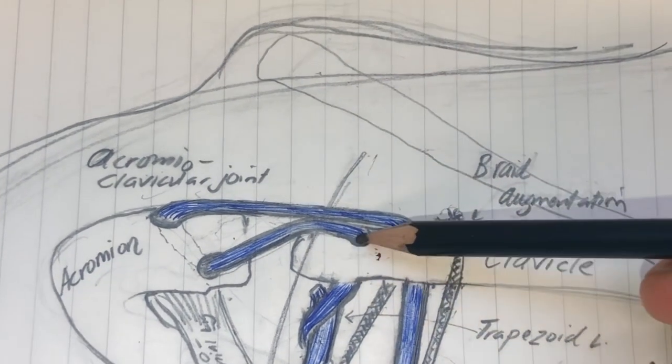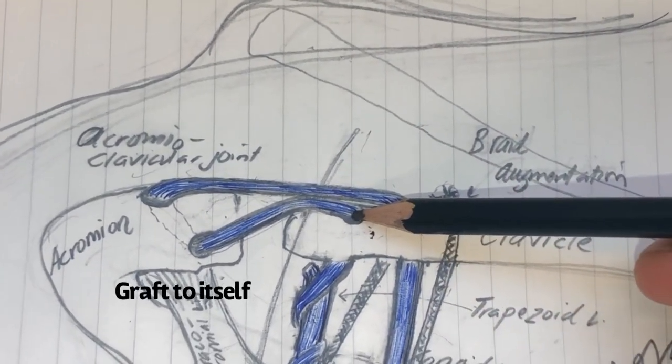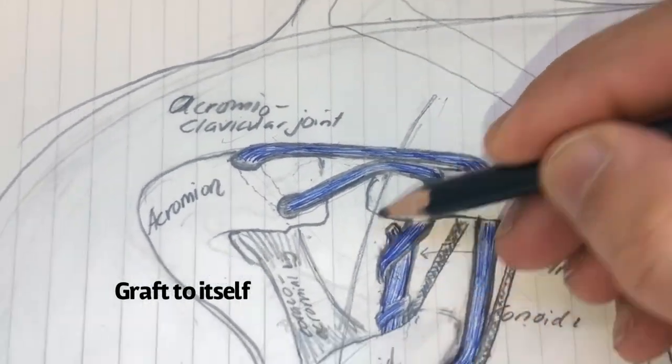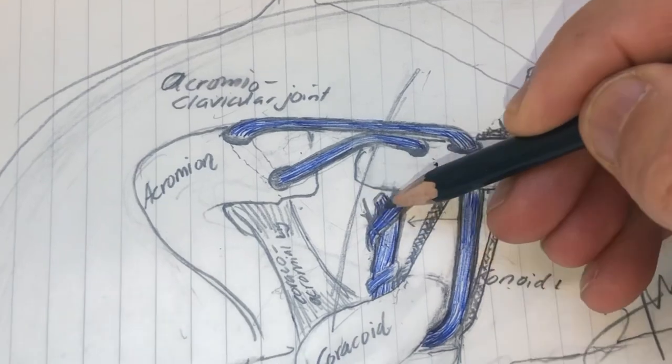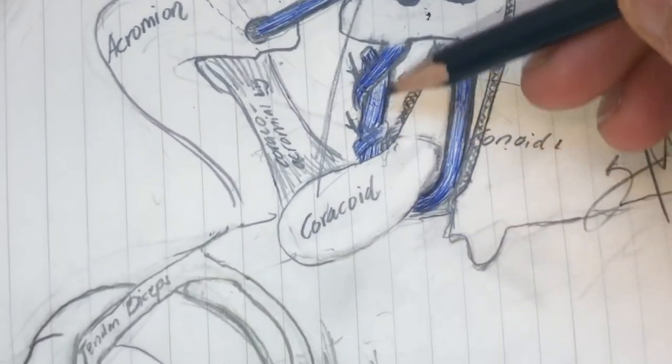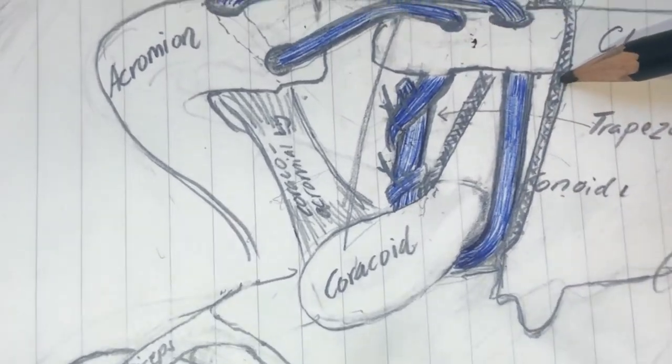And then finally, once I go through this, through the trapezoid tunnel, then I tie the graft to itself. So I basically take a bunch of sutures and tie it to itself. Now there is potential for this to stretch a little bit, but that is why the braid is there. The braid will not let this clavicle go up.